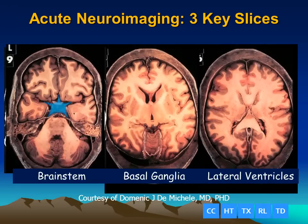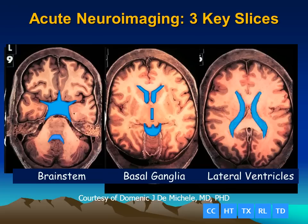If we look at the normal brain slices, we can see the suprasellar cistern filled with cerebrospinal fluid, and the fourth ventricle. At the level of the basal ganglia, we have the two frontal horns, the third ventricle, and the quadrigeminal plate cistern.